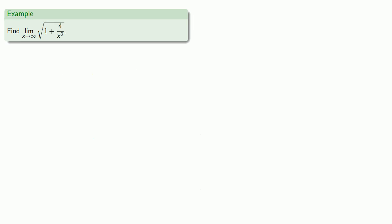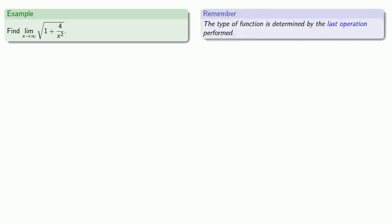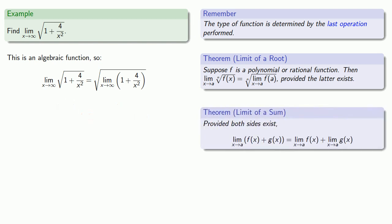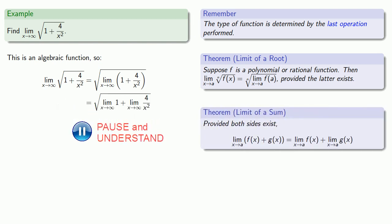As another example, we might find the limit as x goes to infinity of the square root of 1 plus 4 over x squared. The type of function is determined by the last operation, and so this is a root. The limit of a root is the root of the limit, and the limit of a sum is the sum of the limits, and we can evaluate these limits directly.